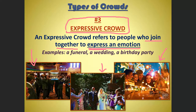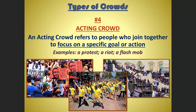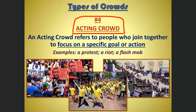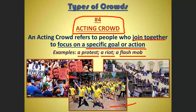Number four is the acting crowd, which starts to connect us to social movements. An acting crowd refers to when people join together with a cause and purpose in order to focus on a specific goal or action — something like a protest, a riot, or a flash mob. People are coming together to achieve something collectively, to act on behalf of a certain ideology or purpose.